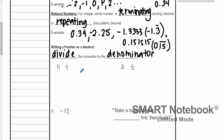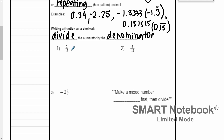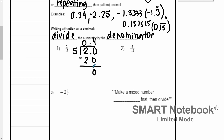So for 2/5, we divide the numerator by the denominator — the 2 goes inside the division box, the 5 goes outside. 5 can go into 2 zero times, so we add a decimal and a 0. 5 can go into 20 four times; 5 times 4 is 20, we subtract and we're done. Our answer is 0.4.